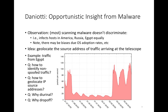Now that we know a bit about telescopes, let's look at how they're actually used in a paper by Denody. The observation here is that one can gain opportunistic insight from malware. Most scanning malware doesn't discriminate — a piece of malware will generally infect a host regardless of where it is physically in the world, so long as that host is vulnerable. It will equally infect without bias hosts in America, Russia, or Egypt, though there may be biases due to OS adoption rates. The idea is that it's going to affect hosts all over the world.